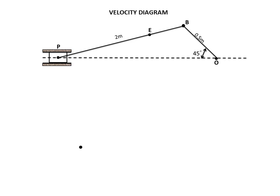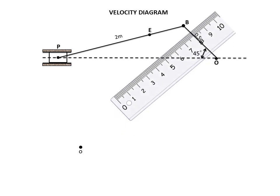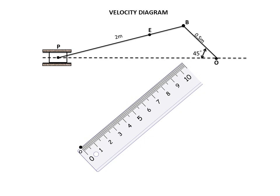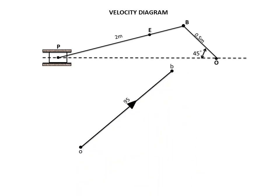Put the fixed point — here it is O, named small o. There is only one fixed point; if multiple fixed points exist, they appear as a single point on the vector diagram. Now take your scale, position it perpendicular to your crank, and transfer it to the velocity diagram. The linear velocity of the crank is approximately 9.5 m/s. Using a scale of 1 mm = 0.1 m/s, 9.5 m/s is represented as 95 mm. Mark 95 mm, connect it, and name that point B — OB represents your crank velocity. Mark the direction.